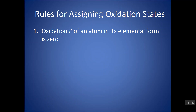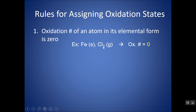Let's think of some rules for assigning oxidation numbers. First, any atom in its elemental form is zero. So if you see a free element — whether it's diatomic or monatomic — if there's just a single element there with no charge, the oxidation number is zero. It doesn't matter what the subscript or the coefficient is. Only one element there means it's zero.